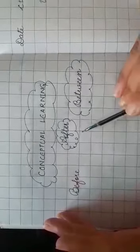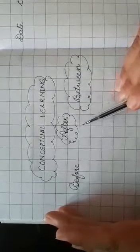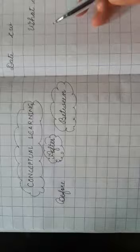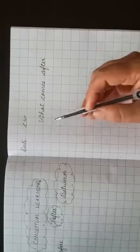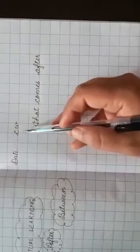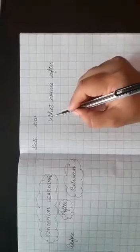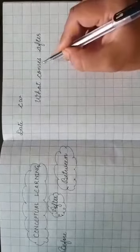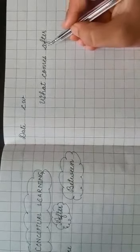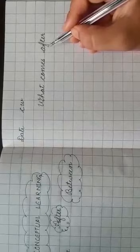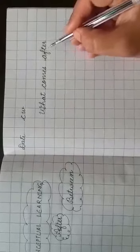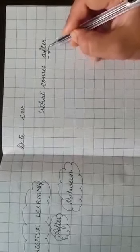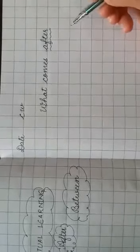First of all I will tell you what is after, then we are going to take some examples. Get ready with your notebook. Write down the date, classwork, and heading. This is your heading: what comes after. Spell out along with me: W-H-A-T what, C-O-M-E-S comes, A-F-T-E-R after.